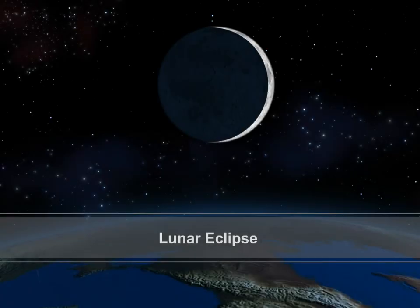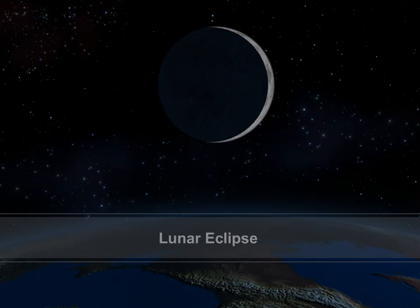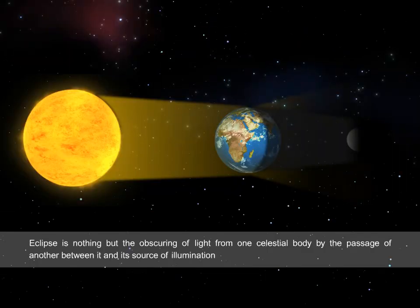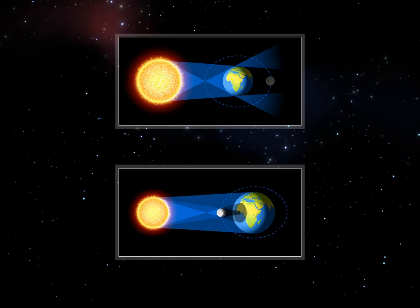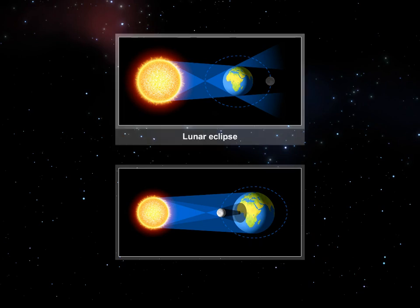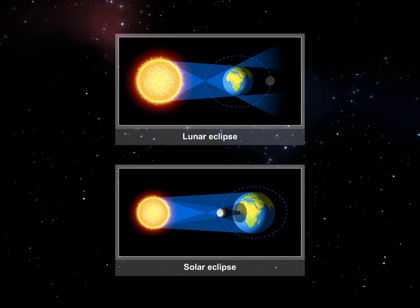Lunar Eclipse. An eclipse is the obscuring of light from one celestial body by the passage of another between it and the observer, or between it and its source of illumination. The formation of eclipses is based on the principle of shadows. There are two types of eclipses based on the relative positions of the earth and the moon: lunar and solar eclipses.